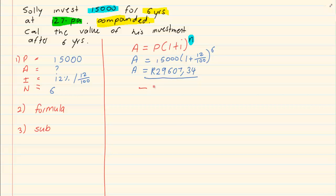So if I only want the interest, I have to subtract the 15,000 rand. Which means that the interest he received was 14,607 rand 34 cents.